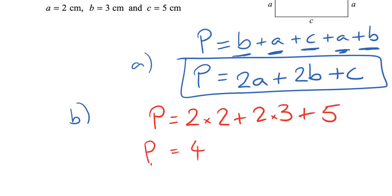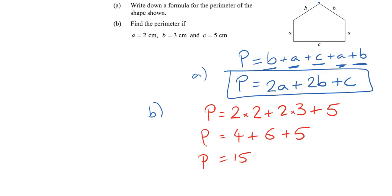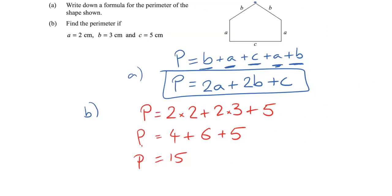Simplifying, we have 4 plus 6 plus 5. P is 15. Now, these were given in centimeters, so our answer for P should be in centimeters too. It's a length. So P is equal to 15 centimeters.